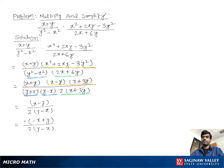We can rewrite the numerator as -(y - x) over 2(y - x). Then (y - x) cancels out, leaving us with -1/2, and this is our final answer.